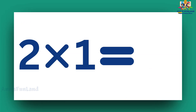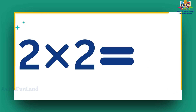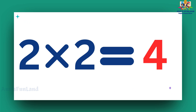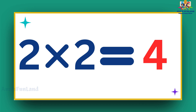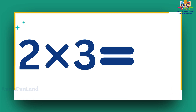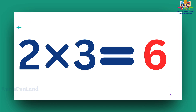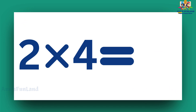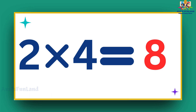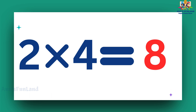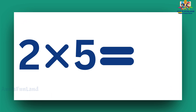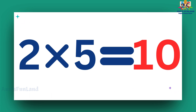Two ones are two. Two twos are four. Two threes are six. Two fours are eight. Two fives are ten.